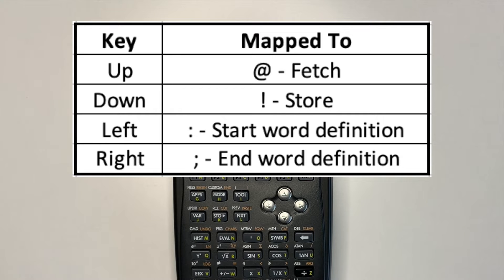Up arrow is mapped to at or fetch. Down arrow is mapped to exclamation mark or store. Left arrow is mapped to colon for start of word definition. Right arrow is mapped to semicolon for end of word definition.